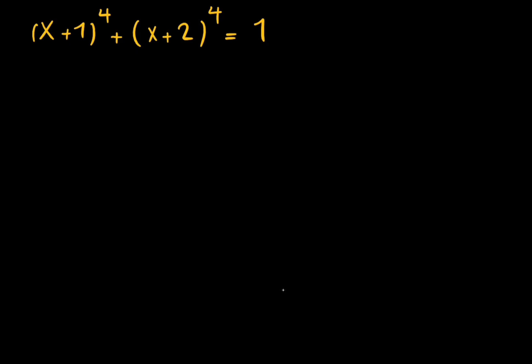Welcome to Maths with Markit. Today we're going to solve a really nice equation from the Australian Maths Olympiad. If I have (x+1)⁴ plus (x+2)⁴ equal to 1, and we know that x is a real number, we want to find x.